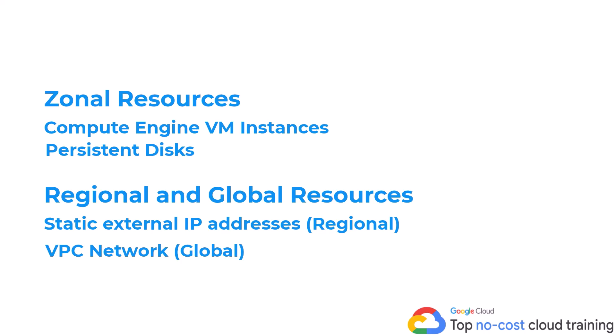When you look at the VPC network as a whole, that network setup is a global resource, meaning it can be accessed all over the world. Those are the differences between zonal, regional, and global resources — but it's no fun unless we look a little bit deeper with a brief demo in the Google Cloud Console.